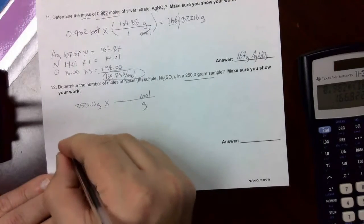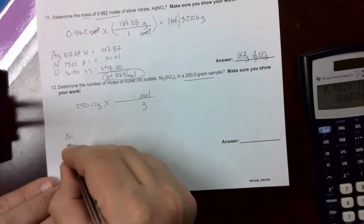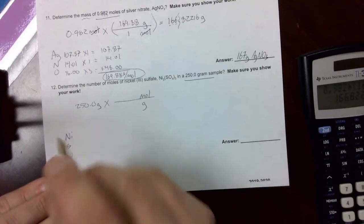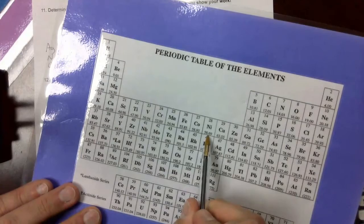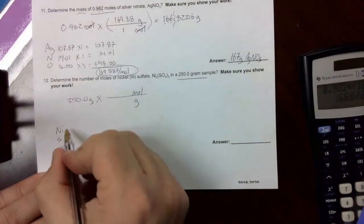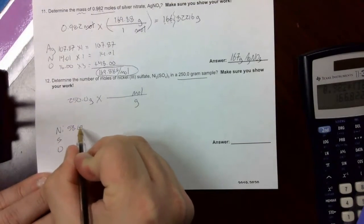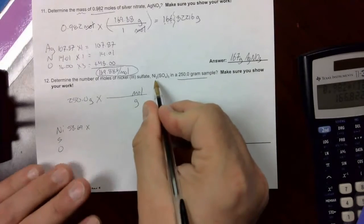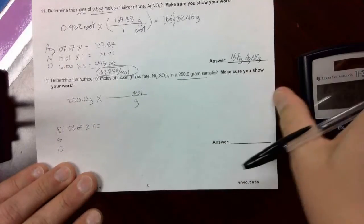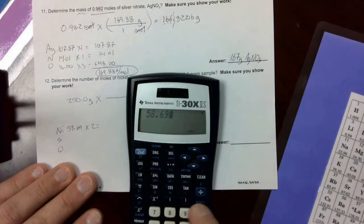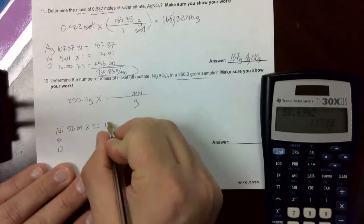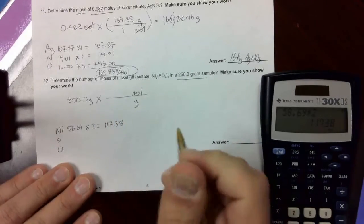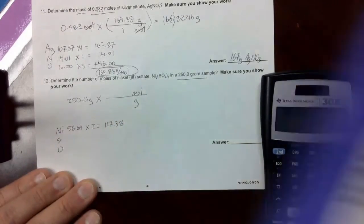So we're going to list our elements. Nickel, sulfur, and oxygen. Find the masses of each. Nickel is in the middle of the periodic table, 58.69. Times the subscript on nickel, which is 2. And that gives us 117.38.